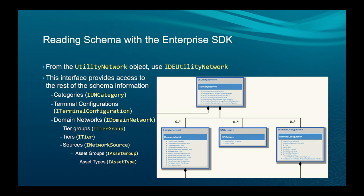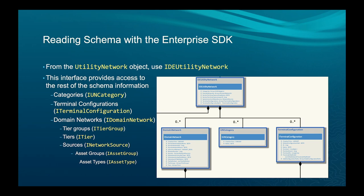On the Enterprise SDK side, you start from the utility network via an interface called IDE Utility Network — DE stands for data element. From that, you can navigate down through categories, terminal configurations, domain networks, and so forth. On the server, you get access to everything.